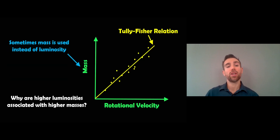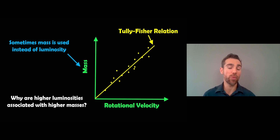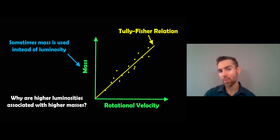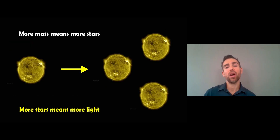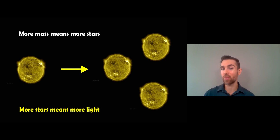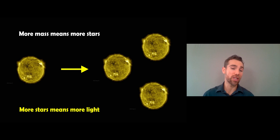Sometimes when you look at the Tully-Fisher relation, mass is used instead of luminosity — the two are somewhat interchangeable. Why would higher luminosities be associated with higher masses? Galaxies are made of stars, so if you've got more mass you've generally got more stars, and more stars means more light. So the mass is proportional to the luminosity or brightness of the galaxy because it relates to the number of stars, and that's why you can use one or the other.